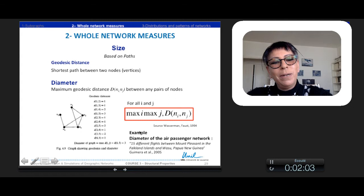Also, we have examples in the reality. Guimera et al., studying the Air Passenger Network, found that the longer path in the world is between two different airports, Mount Pleasant in the Falkland Islands and Wazoo in Papua New Guinea, with 15 different flights between both.